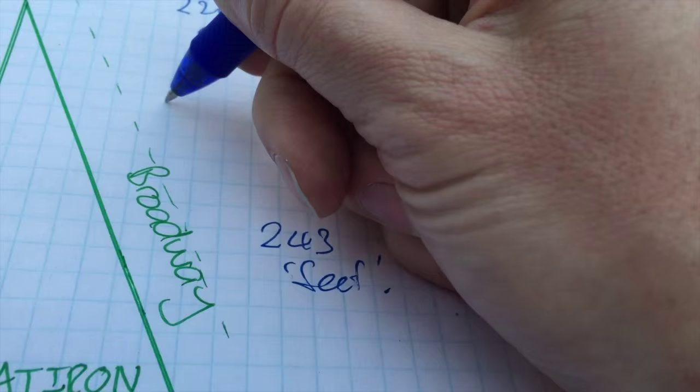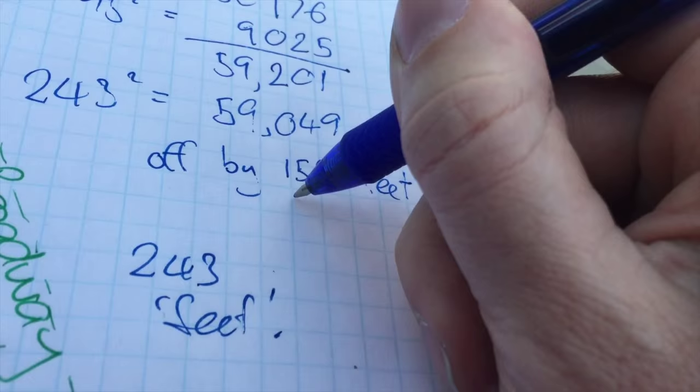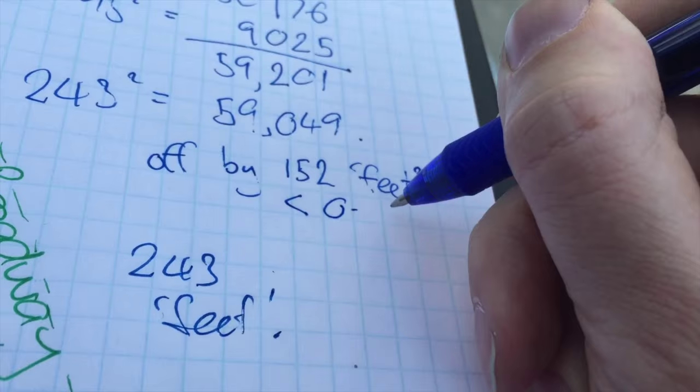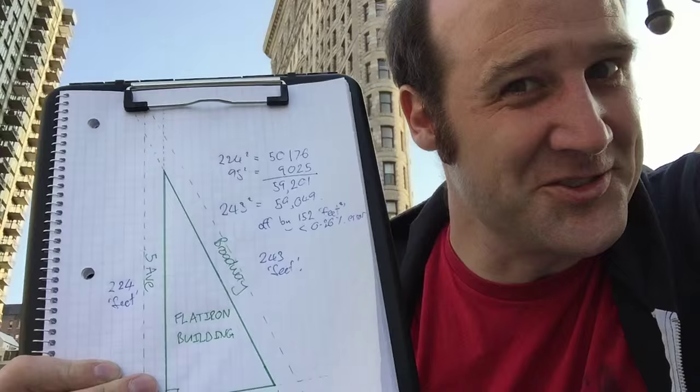95 squared equals 9,025. 224 squared equals 50,176. Together that's 59,201. 243 squared equals 59,049. It's less than 0.26% error — the Flatiron Building is a right-angled triangle.